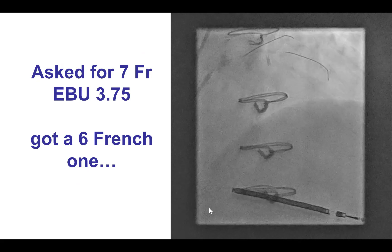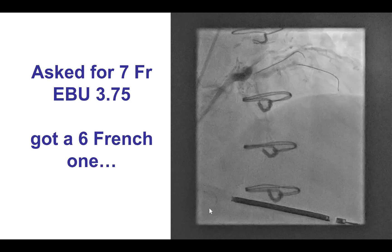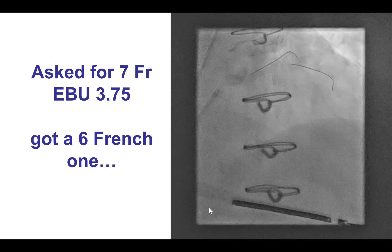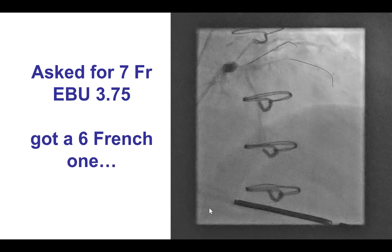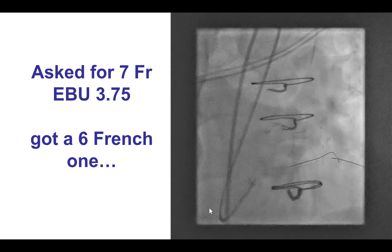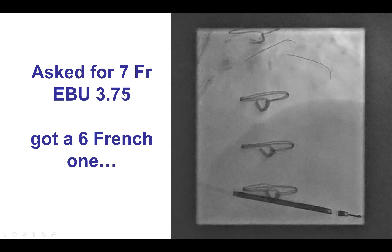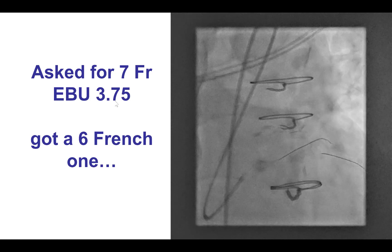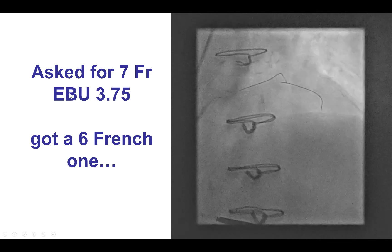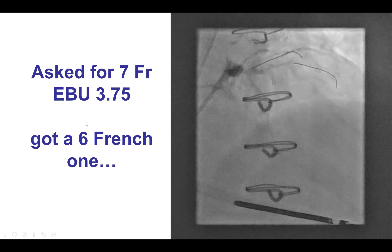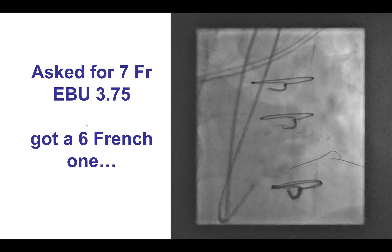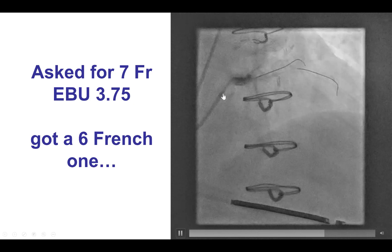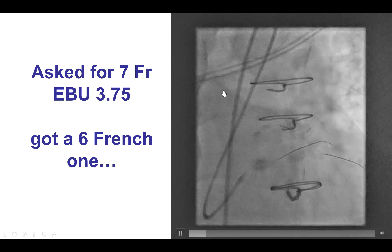We asked for the 7 French EBU 3.75 guide, but actually got a 6 French one, and we did not realize it until after we were doing the procedure. So another lesson here is to always check your equipment before you start the case, because having a larger guide would have probably made the procedure much easier, even though eventually it was successful using the 6 French guide.